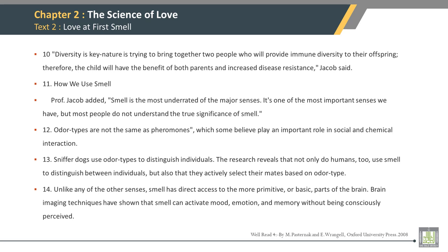First sentence of Paragraph 10: Diversity is key — nature is trying to bring together two people who will provide immune diversity to their offspring. Therefore, the child will have the benefit of both parents and increased disease resistance, Jacob said. First sentence of Paragraph 11: Professor Jacob added, smell is the most underrated of the major senses. First sentence of Paragraph 12: Odor types are not the same as pheromones, which some believe play an important role in social and chemical interaction. First sentence of Paragraph 13: Sniffer dogs use odor types to distinguish individuals.